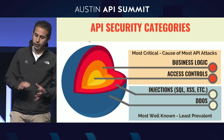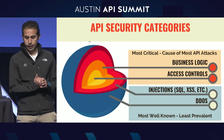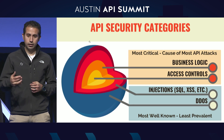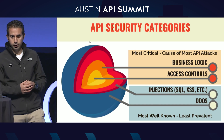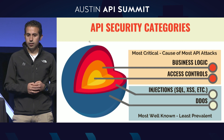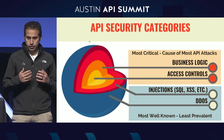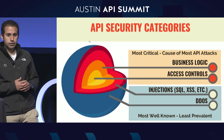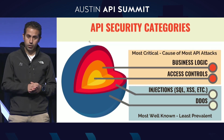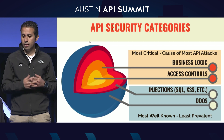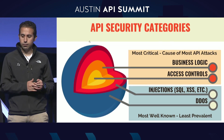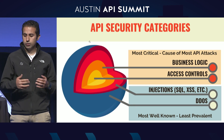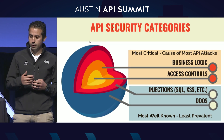If we look at the API security categories, the more widely known ones — like the injection attacks, SQL, cross-site scripting, and denial of service — are the ones that stem from coding errors. They're the technical security vulnerabilities. But they're not the ones causing the vast majority of attacks. The vast majority of attacks are happening because of business logic and access control flaws that I'll be talking more about in this presentation.